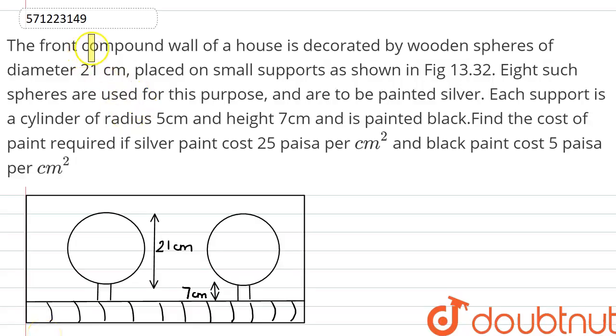Hello everyone, the question is the front compound wall of a house is decorated by wooden spheres of diameter 21 cm, placed on small supports as shown in the figure.